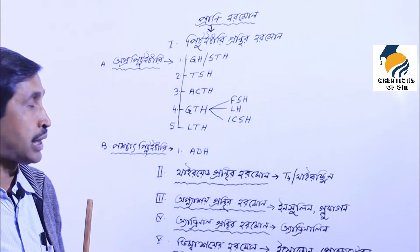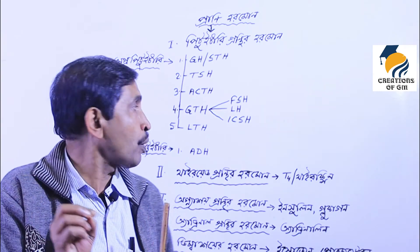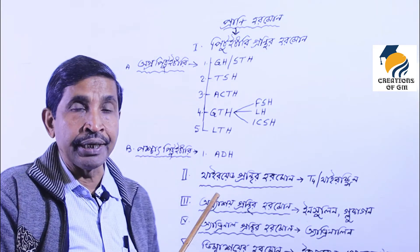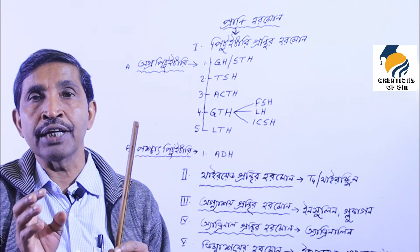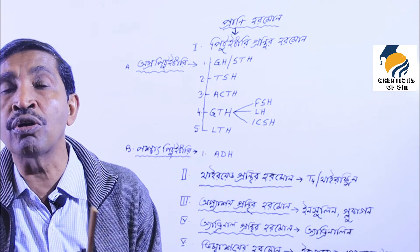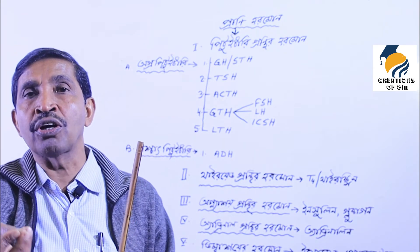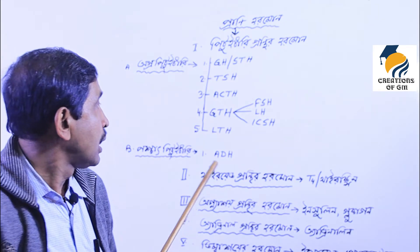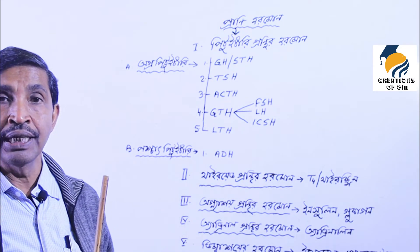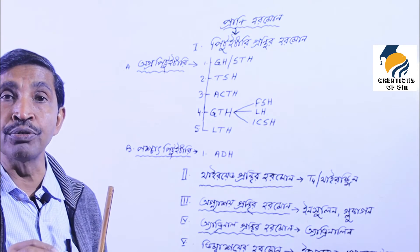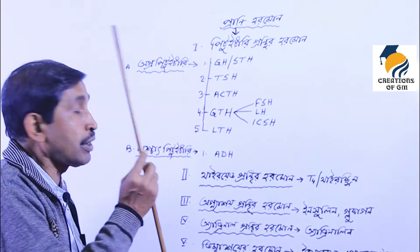So from the anterior pituitary we have: GH, TSH, ACTH, FSH, LH, ICSH — and the fifth type is LTH — luteotrophic hormone. This luteotrophic hormone in females helps in milk production for the infant.